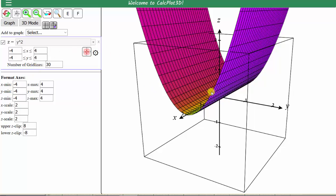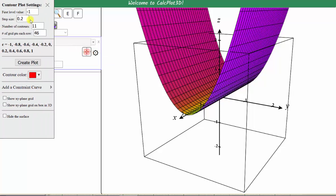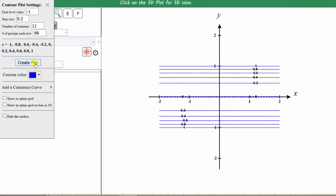Here's the graph of the surface. Let's click create contour plot. Use the default settings. Let's change the color back to blue, and click create plot. And we have our contour plot for z equals y squared.